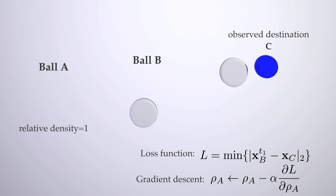Specifically, suppose we have two colliding elastic balls. If we observe ball B will stop at destination C after collision, we can infer the relative density of the two balls.